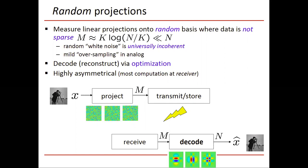Now the main idea here is that these white noise vectors, these random vectors are universally incoherent, meaning that statistically they're orthogonal with anything that you want, at least on average. And because of that, a mild oversampling in analog gives you enough information to later be able to reconstruct the signal.